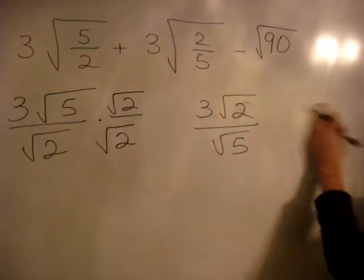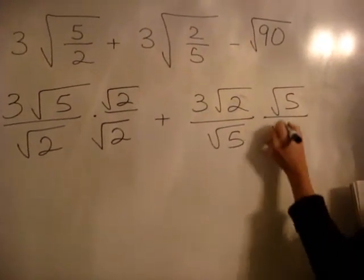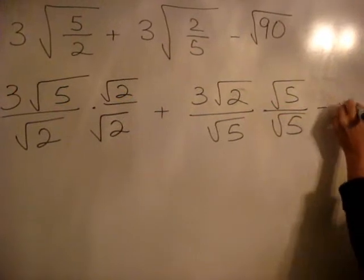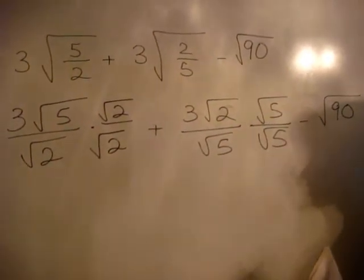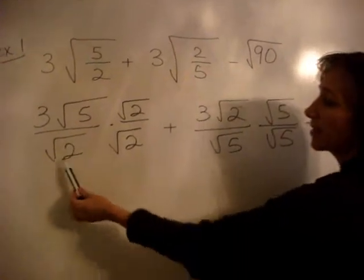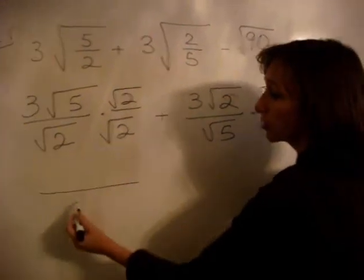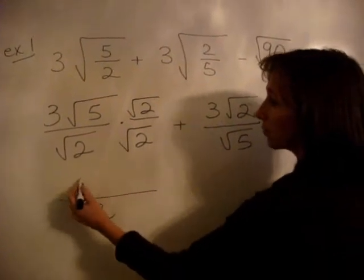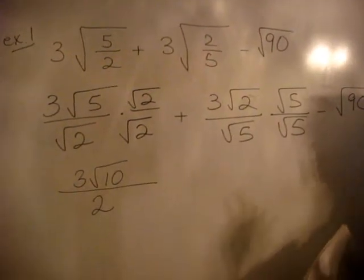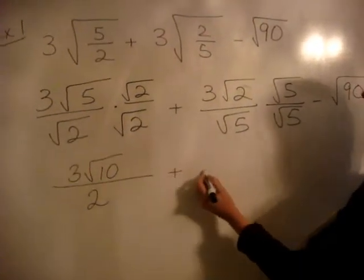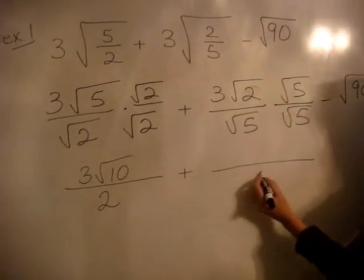Let's rationalize this one: square root of five over the square root of five. Over here we have the square root of 90. Remember you can't have a radical in the denominator — it's not simplified. By taking the square root of two times the square root of two, that gives us the square root of four, which is two. On the top we have three times the square root of ten. So that one's simplified; can't do anything else to it.